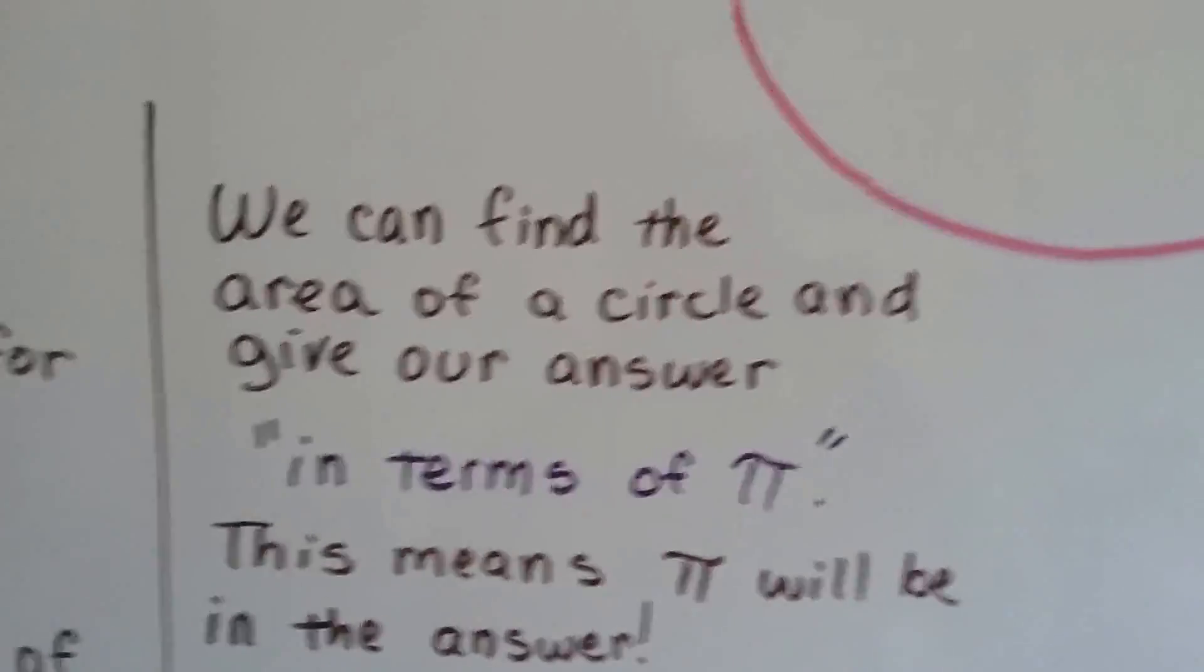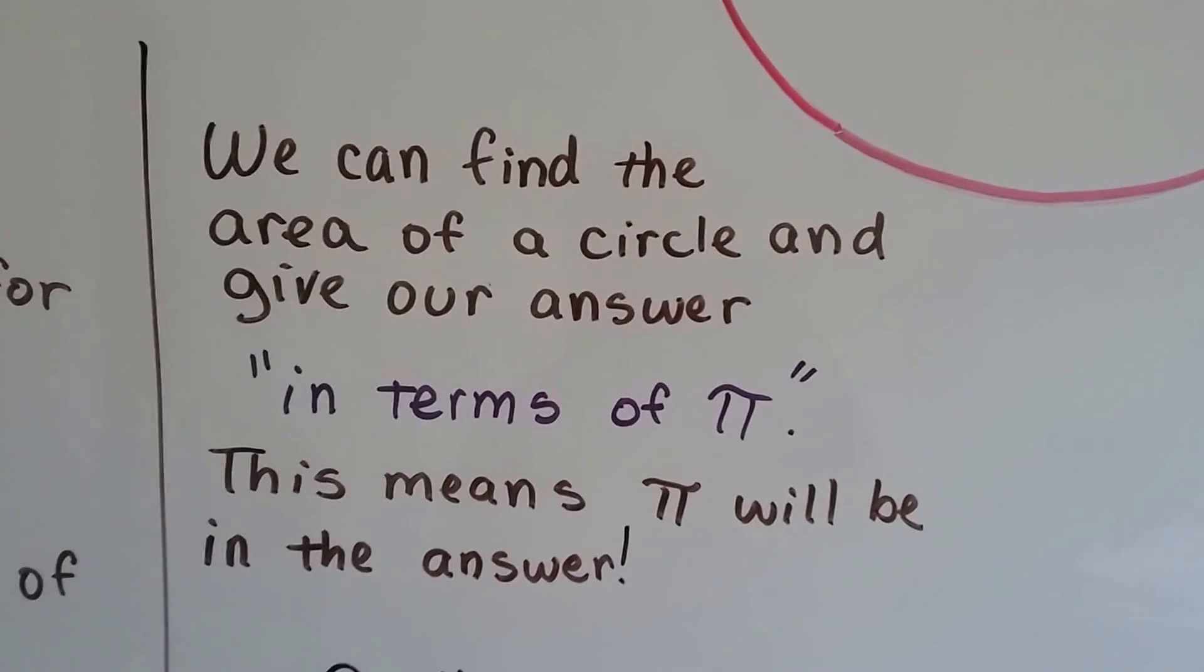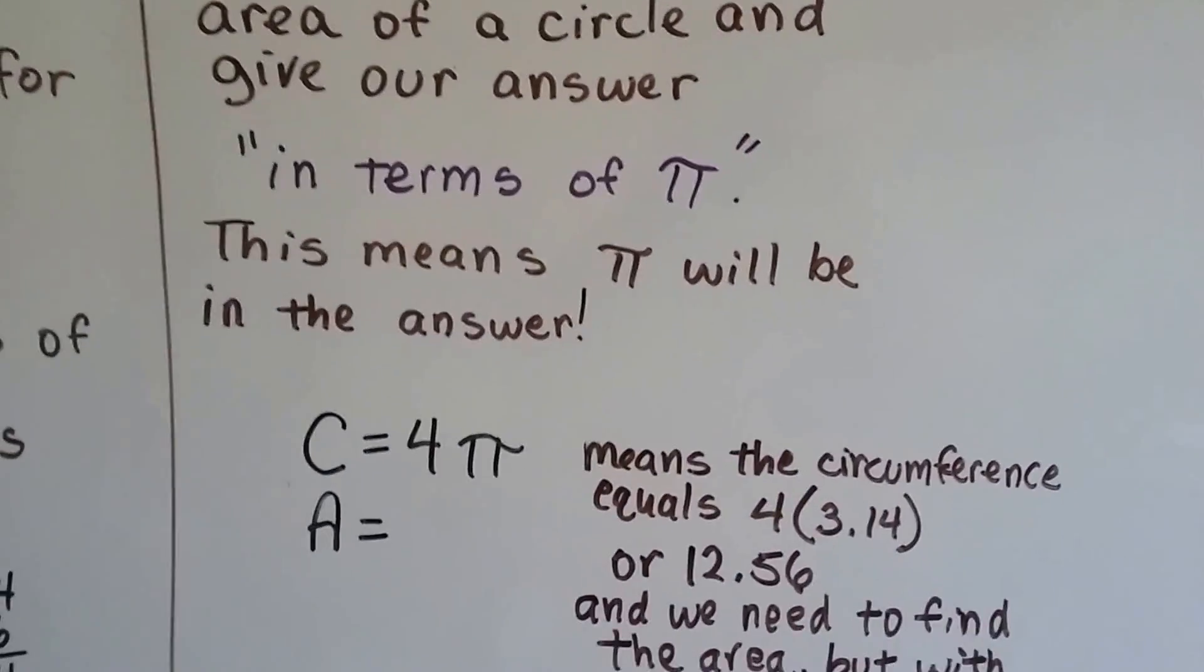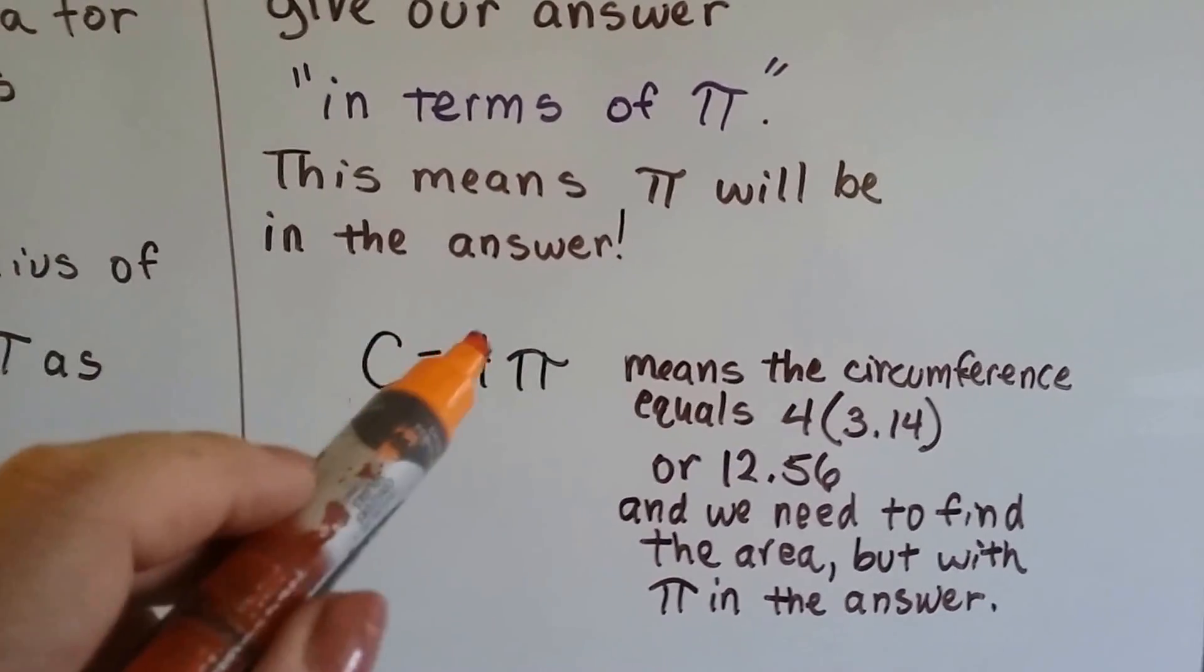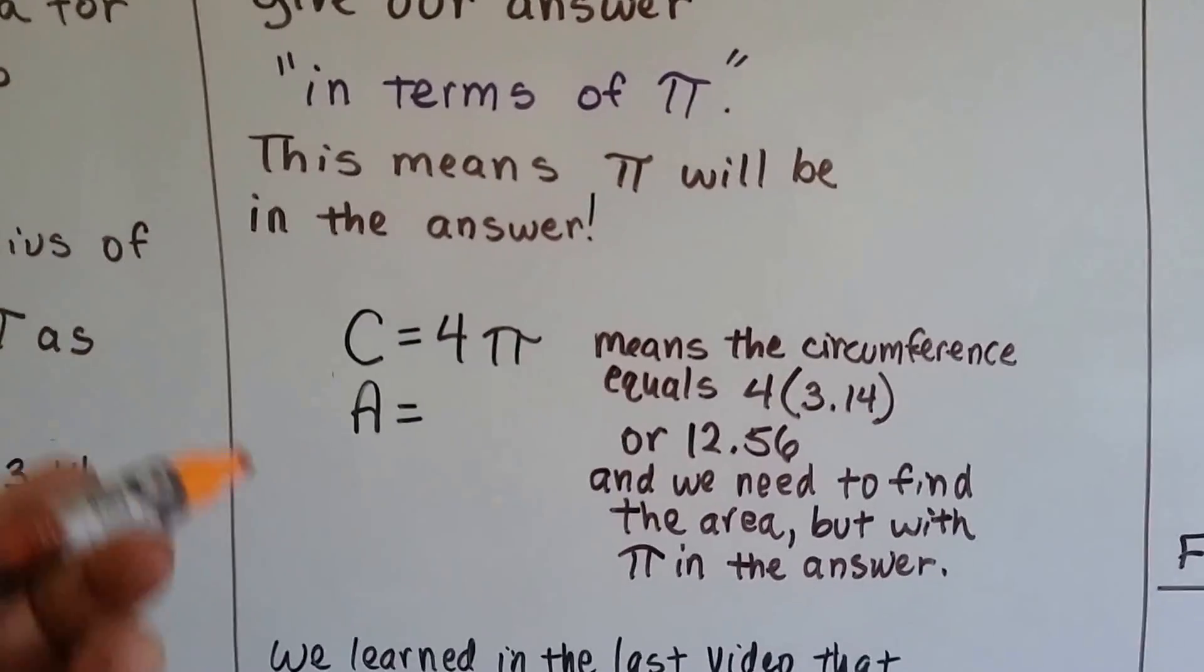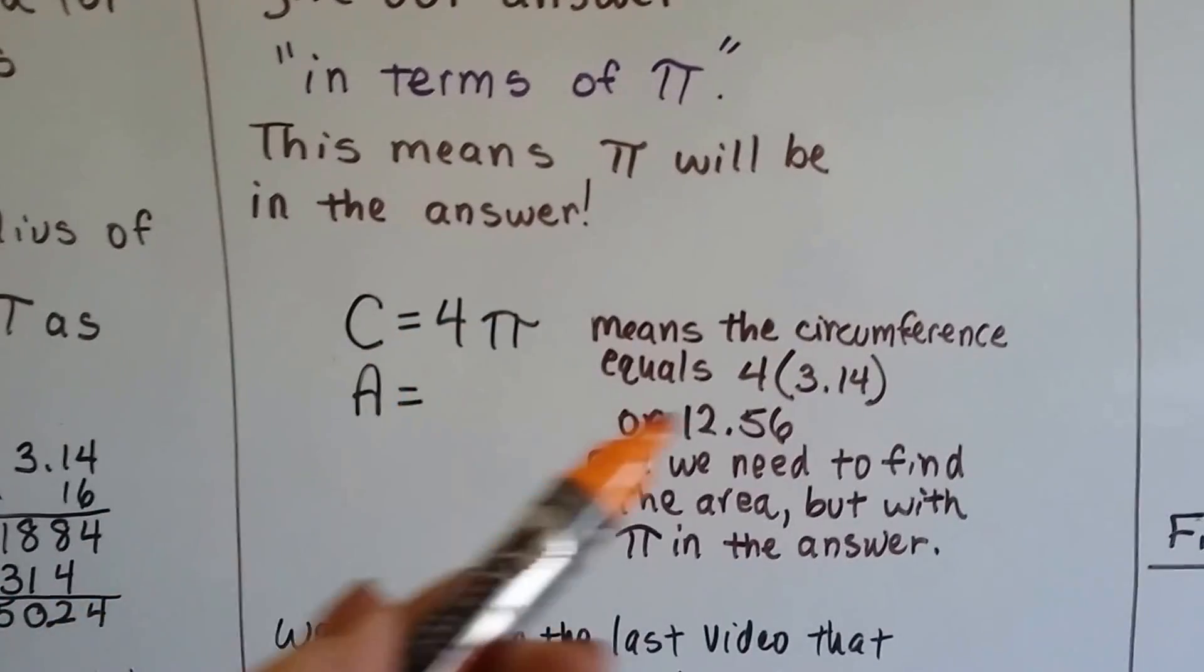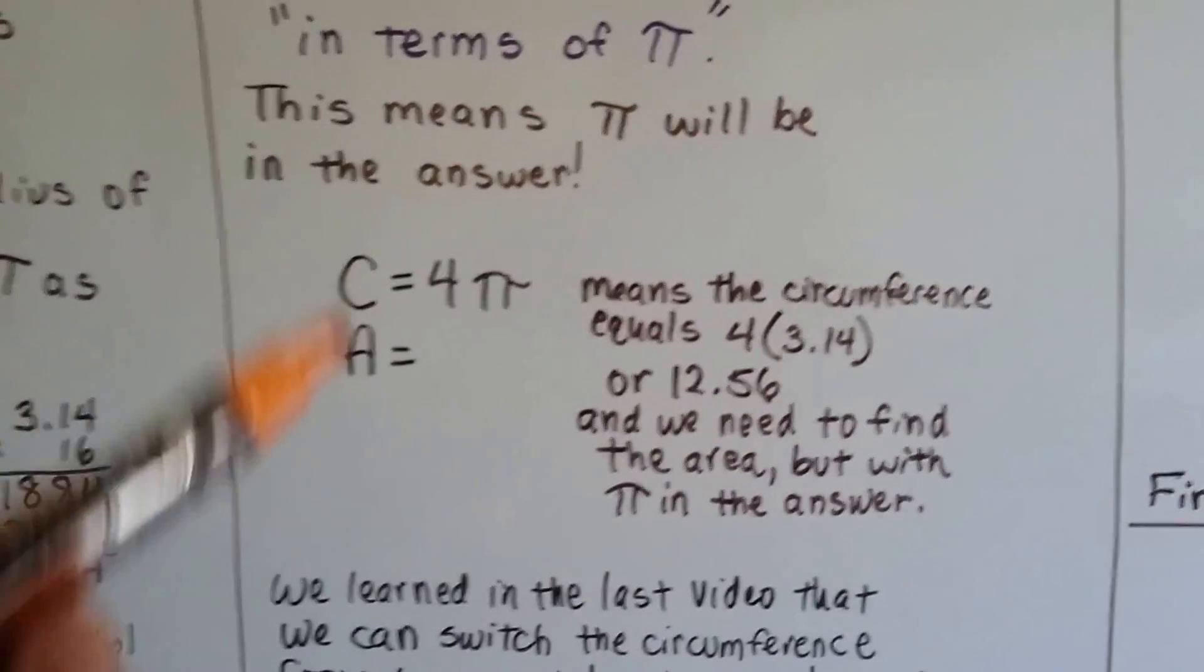We can find the area of a circle and give our answer in terms of pi. This means pi will be in the answer. Well, if the problem says C equals 4 pi, A equals, and we need to find the area, we don't know what the area is, it means the circumference equals 4 times 3.14, or 12.56.